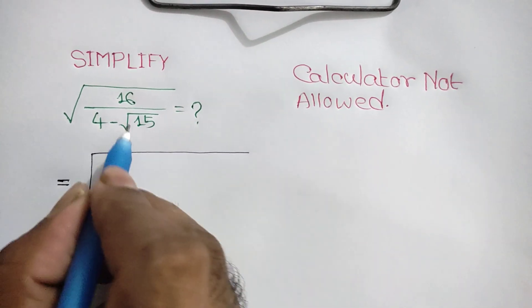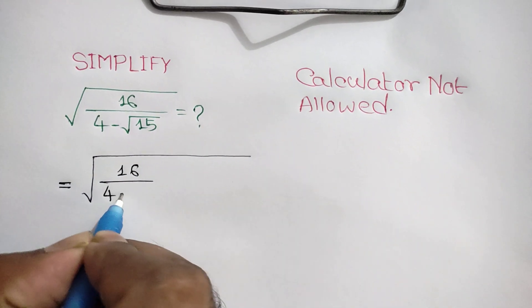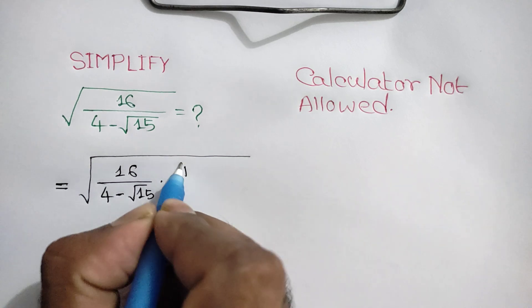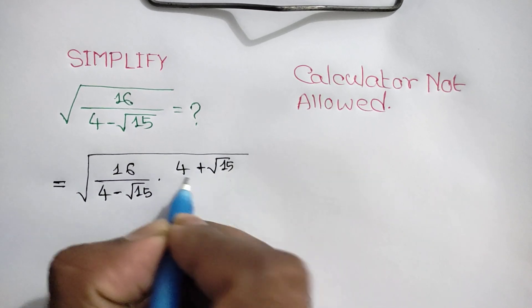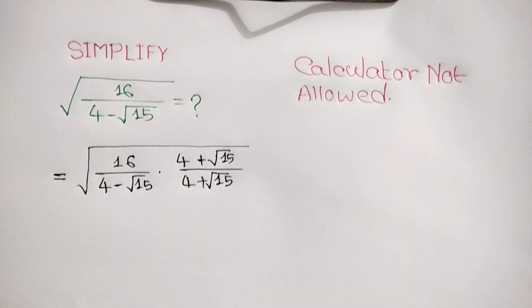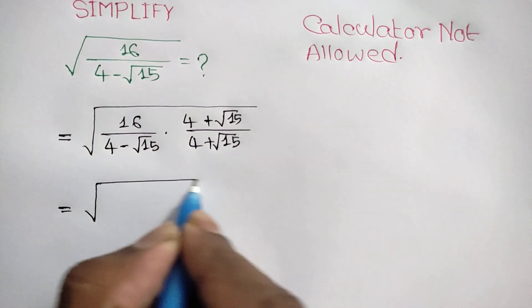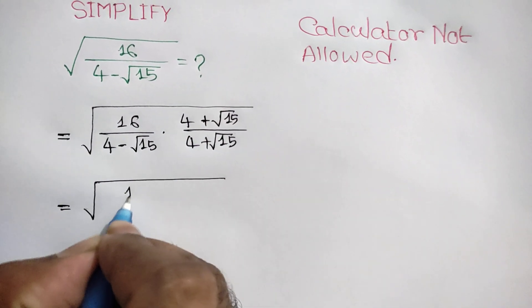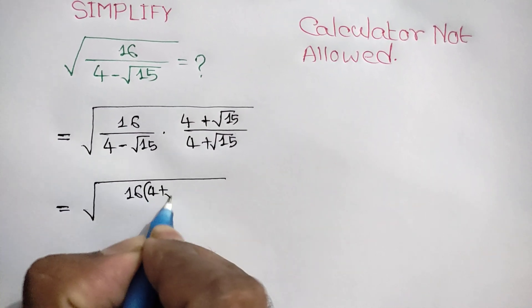Firstly, we can write square root of 16 over (4 minus square root of 15) times (4 plus square root of 15) over (4 plus square root of 15).